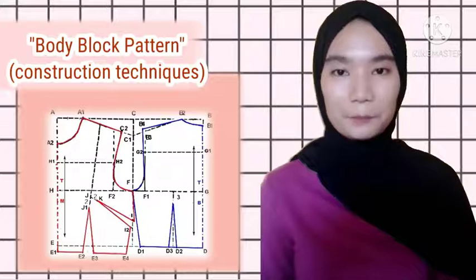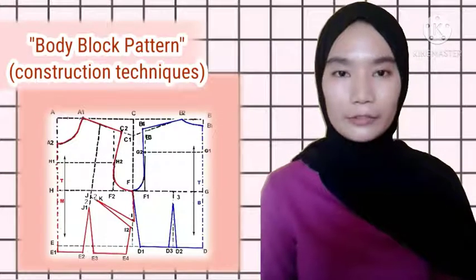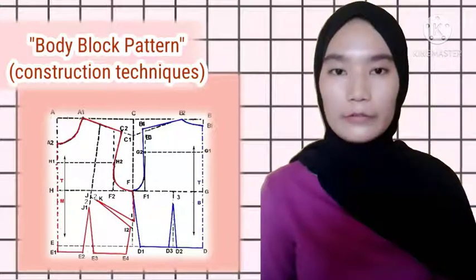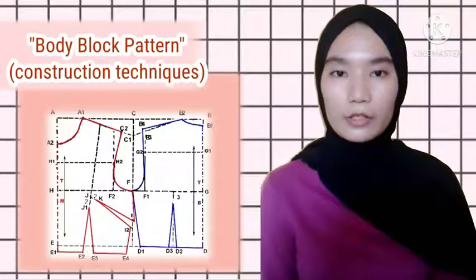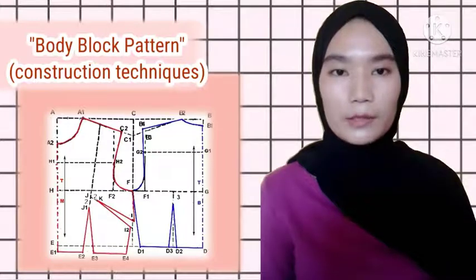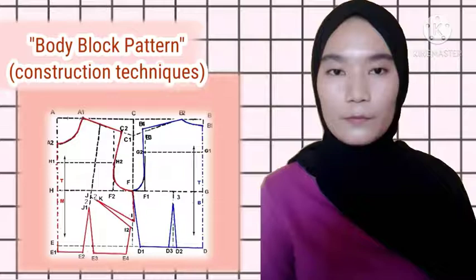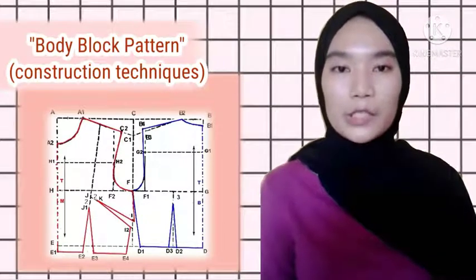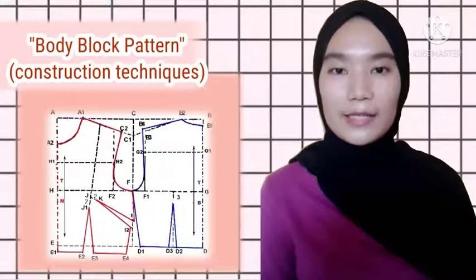Body block pattern. Block pattern with construction. The body block pattern with construction is a picture or piece of paper used for an example before making clothes with a certain working system, based on the original or unchanged human body shape which is made based on the size of the body, calculated mathematically and drawn on paper so that the shape of the body face and back is drawn.